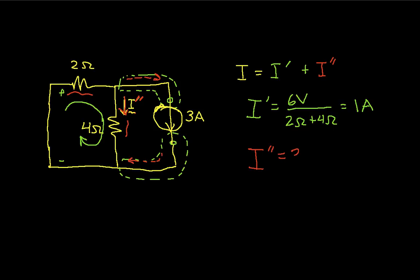So I can use a current divider to determine the current that flows through the 4-ohm resistor. The current divider says it's going to be the total current, which is 3 amps, times the other resistor, 2 ohms, over the sum of the resistors. I have to put a negative sign in front of this because I've drawn the current flowing down, but it's clear from the direction the source is pointing that the current's actually going to flow the other way. So I get minus 1 amp.